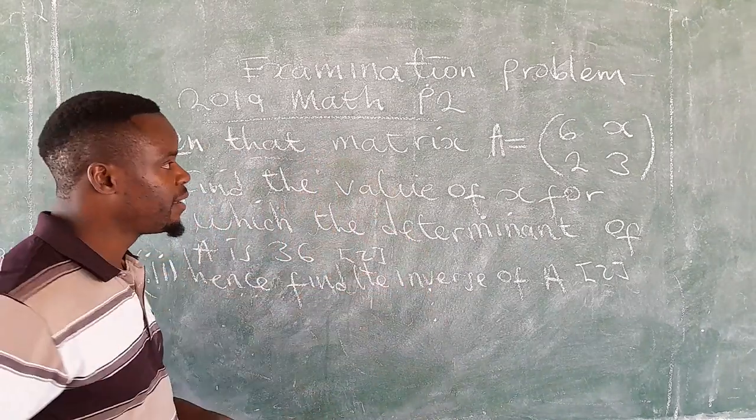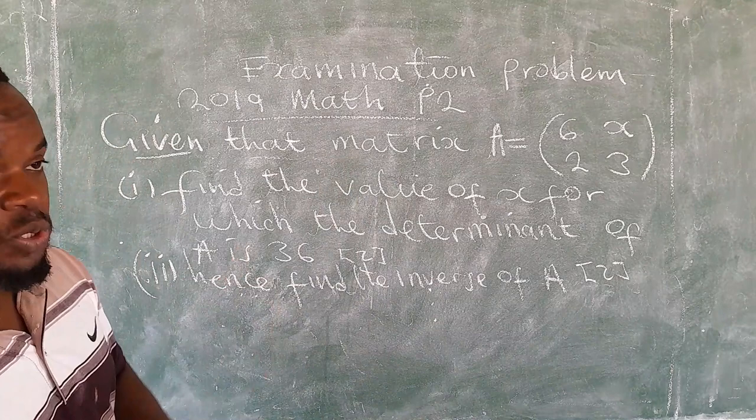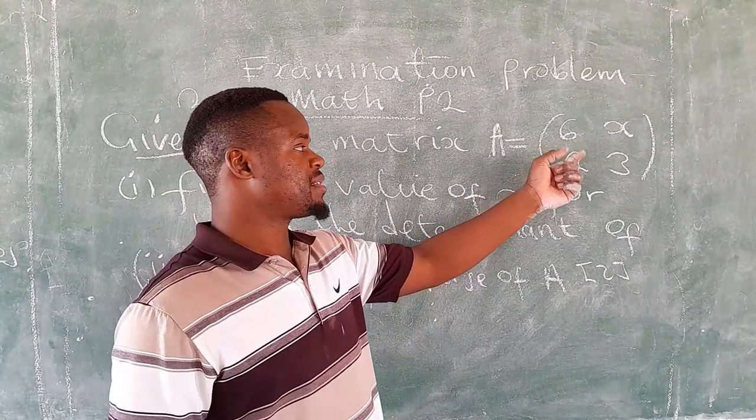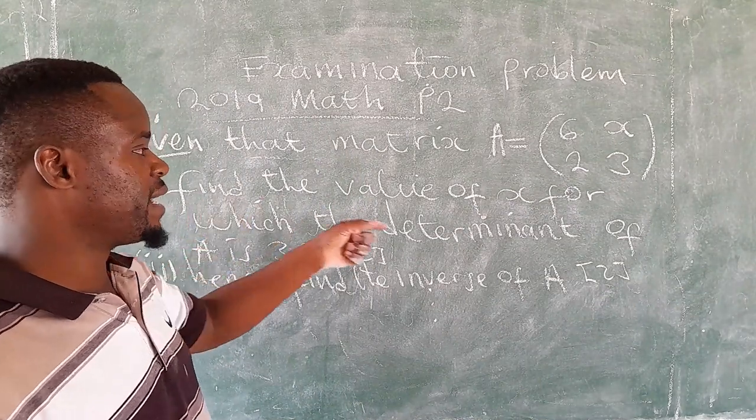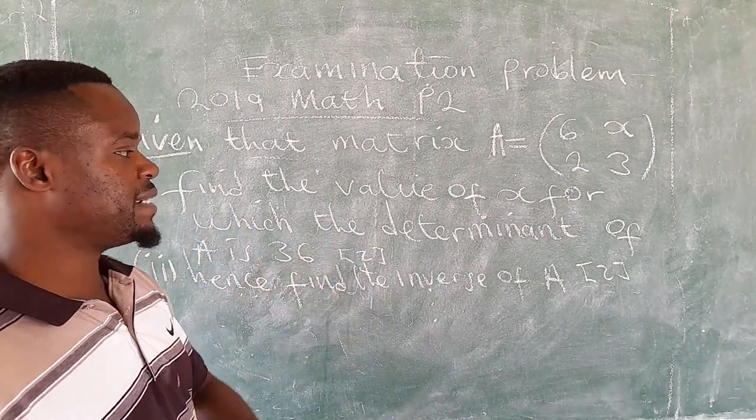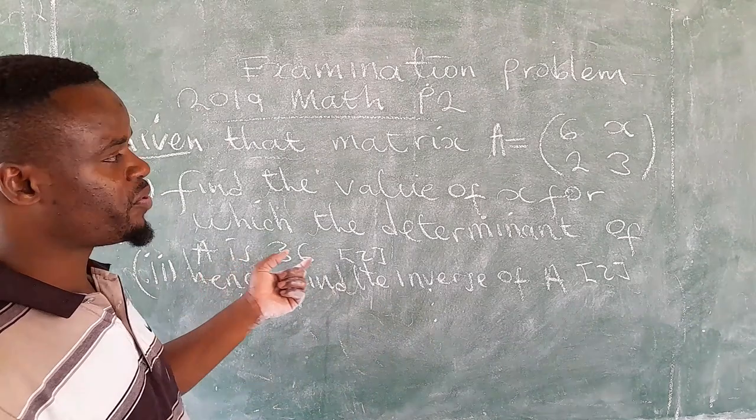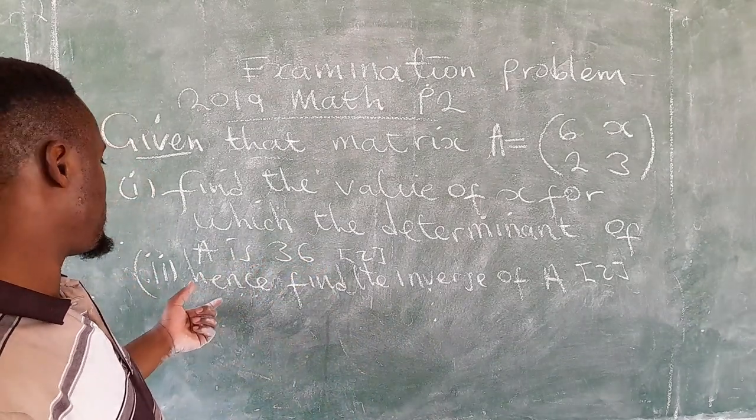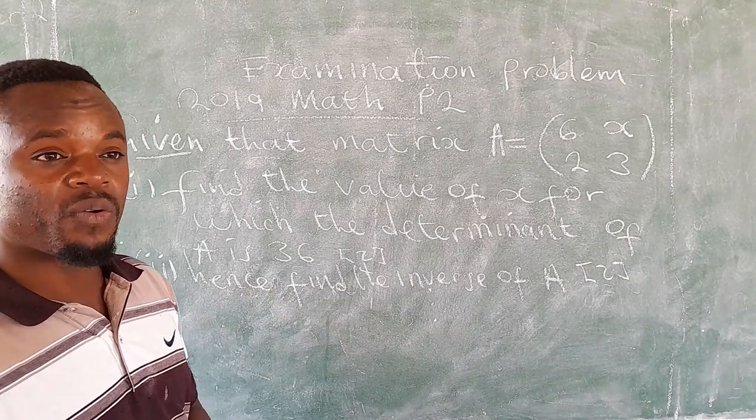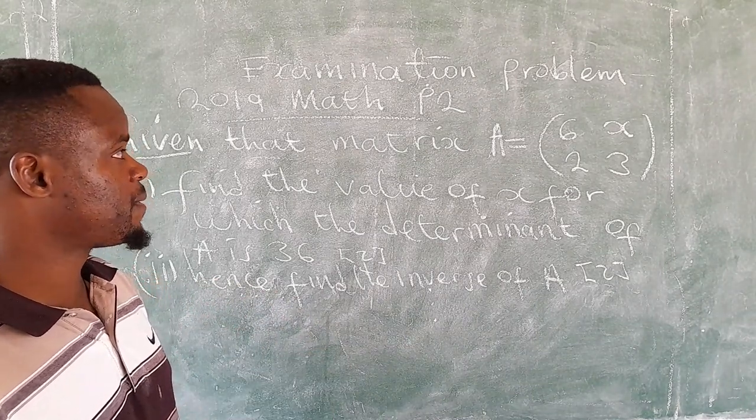Given that matrix A equals (6, 2; x, 3), the first question is: find the value of x for which the determinant of matrix A is 36. Then the second problem: hence find the inverse of matrix A. So how do you go about this one?